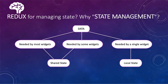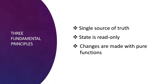Now that we know why we need state management, let's see why Redux. There are three fundamental principles. First, single source of truth — the global state of your application is stored as an object in a single store. Second, state is read-only — the only way to change state is by dispatching an action to the reducer, and an action is an object that describes what has to happen. Third, changes are made with pure functions — reducers specify how state is transformed, taking in the previous state and an action, and returning a new state.